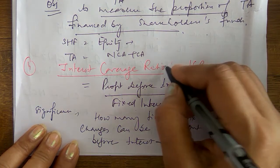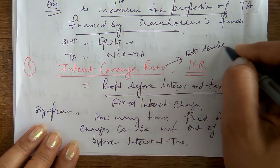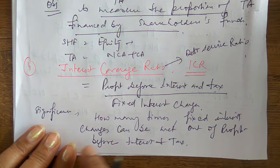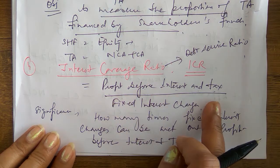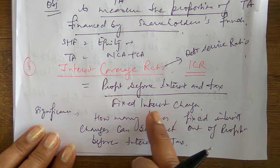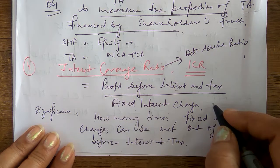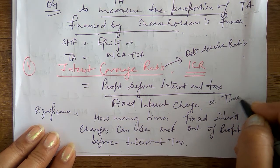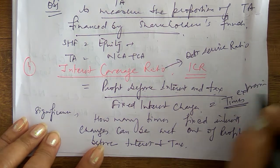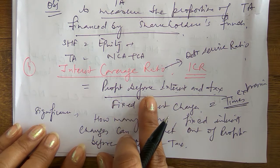This ratio is also called the debt service ratio. So: profit before interest and tax divided by fixed interest charges gives the interest coverage ratio. We express this in times — for example, how many times fixed charges can be met from the profit available before interest and tax.